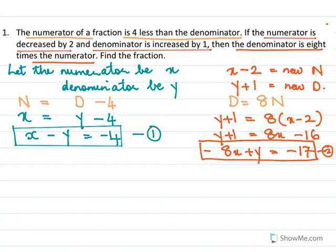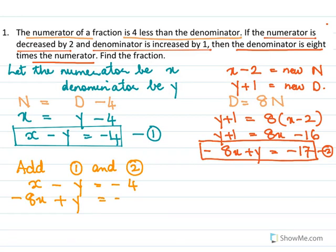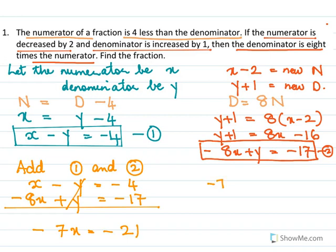This is equation 2. Now we add equation 1 and equation 2: x minus y equal to minus 4, and minus 8x plus y equal to minus 17. The y terms cancel, giving minus 7x equal to minus 21, so x equal to 3.